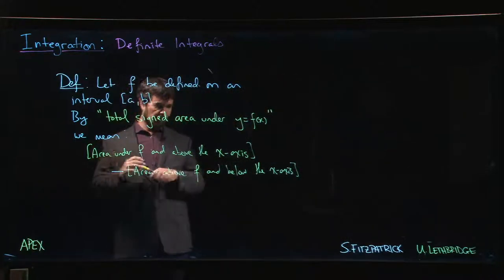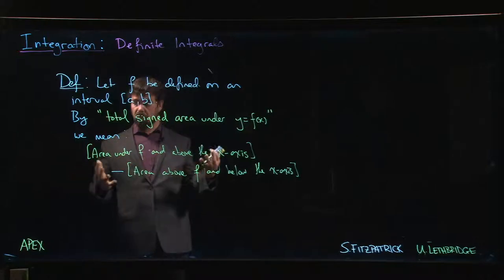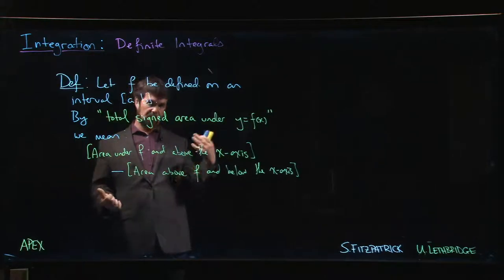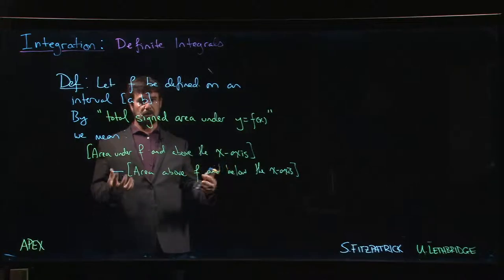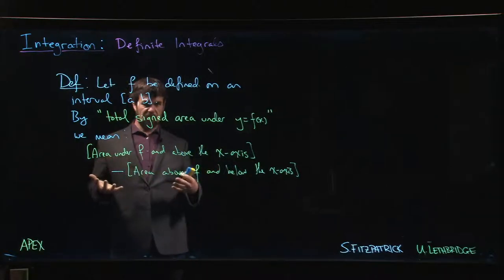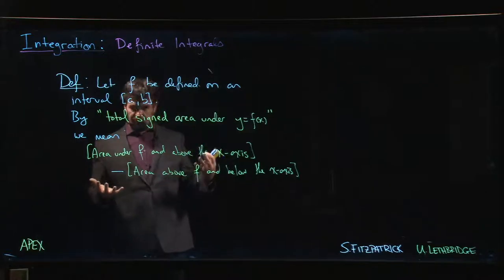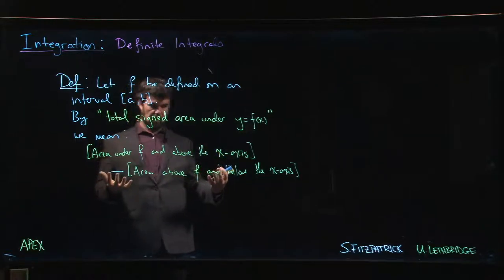But the approach that we take in Apex is reasonable: we define an integral in terms of area first, and then later on we're going to show that that integral can be computed using Riemann sums. Both approaches are more or less equivalent, they're just different ways of looking at it.